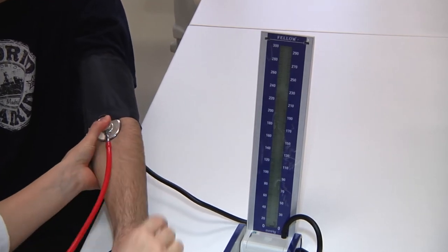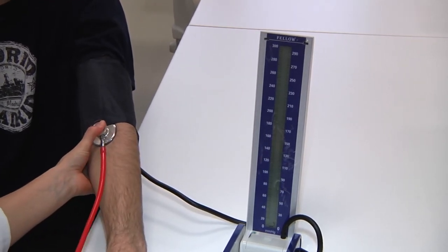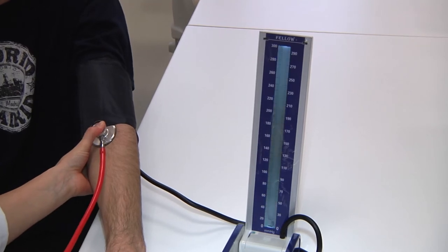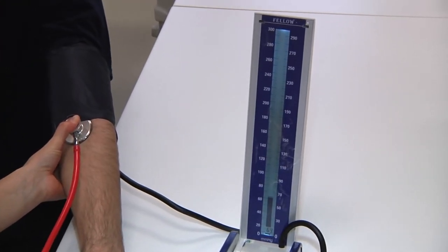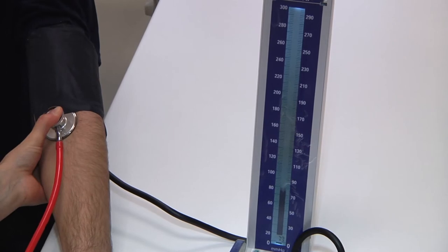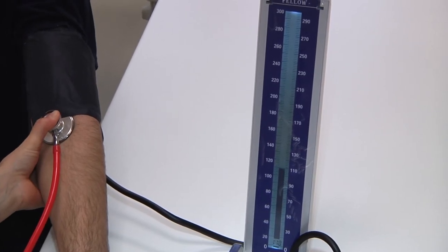We will start with the inflation of the cuff to values that are expected to be higher than systolic blood pressure. In our case, it will be 155 or 160.